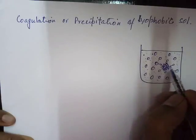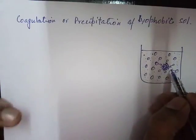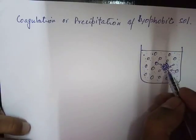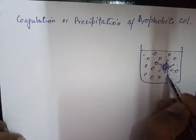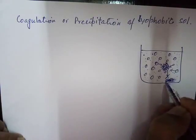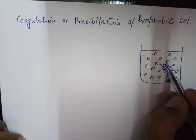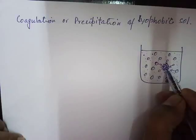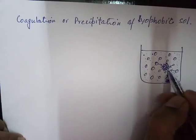This coming together of colloidal particles to form larger aggregates is known as flocculation. It is slightly different from coagulation — flocculation is simply the coming together of colloidal particles to form larger aggregates. Once the colloidal particles are flocculated, they start settling down under the force of gravity, and this settling down is known as coagulation or precipitation.